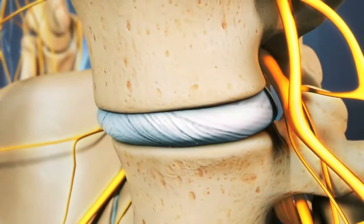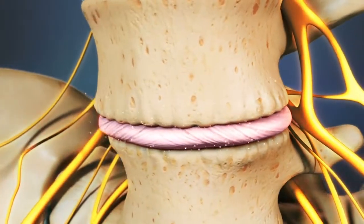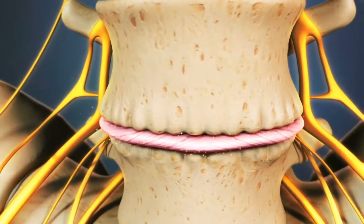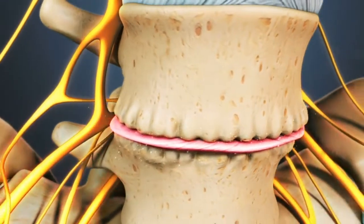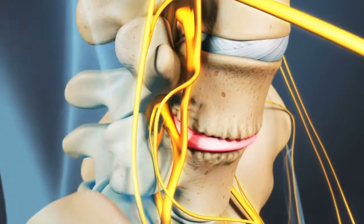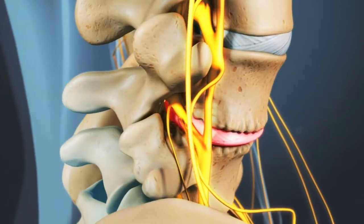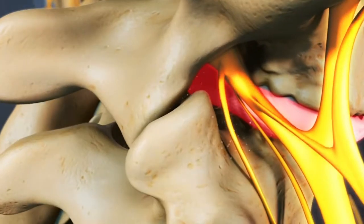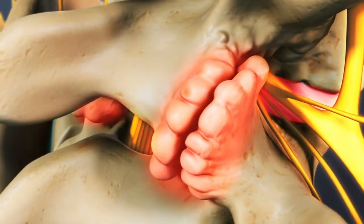Degeneration of the spine occurs as a result of normal aging processes, but can be accelerated by poor posture, traumatic injury, or poor nutrition. Degenerative diseases such as spinal osteoarthritis and spinal stenosis may also cause bone spurs to form.